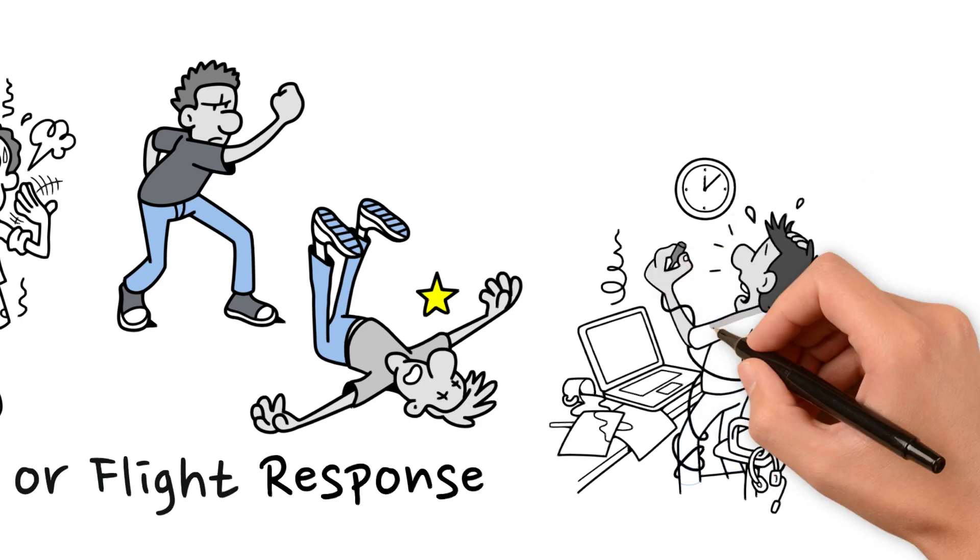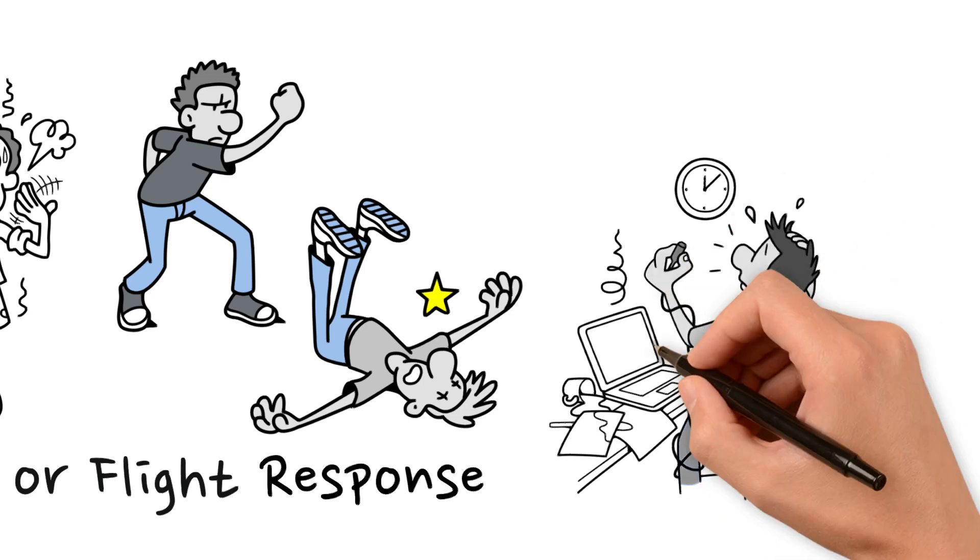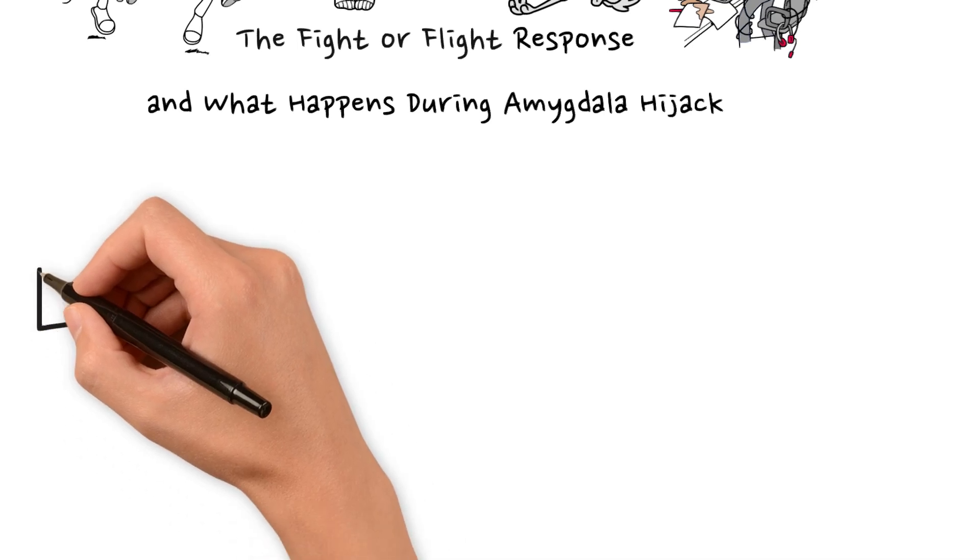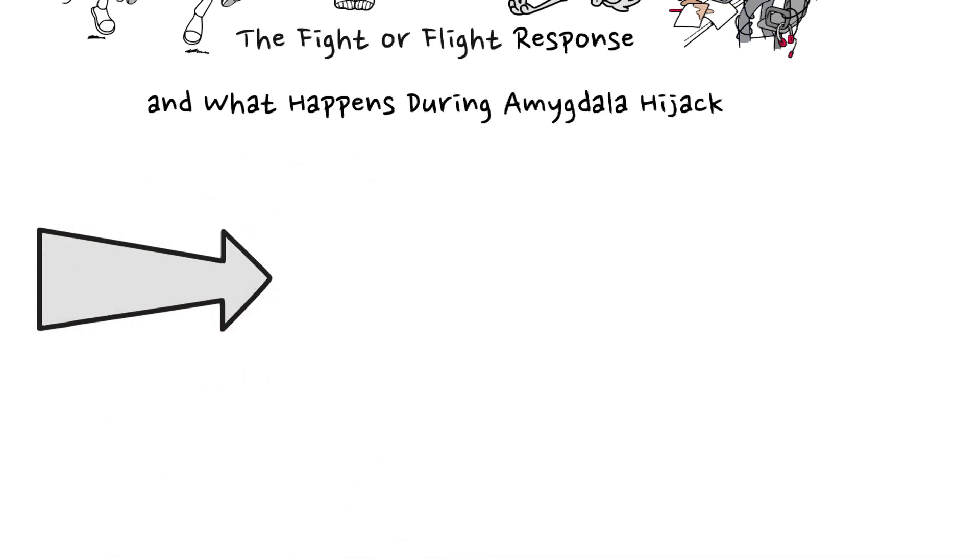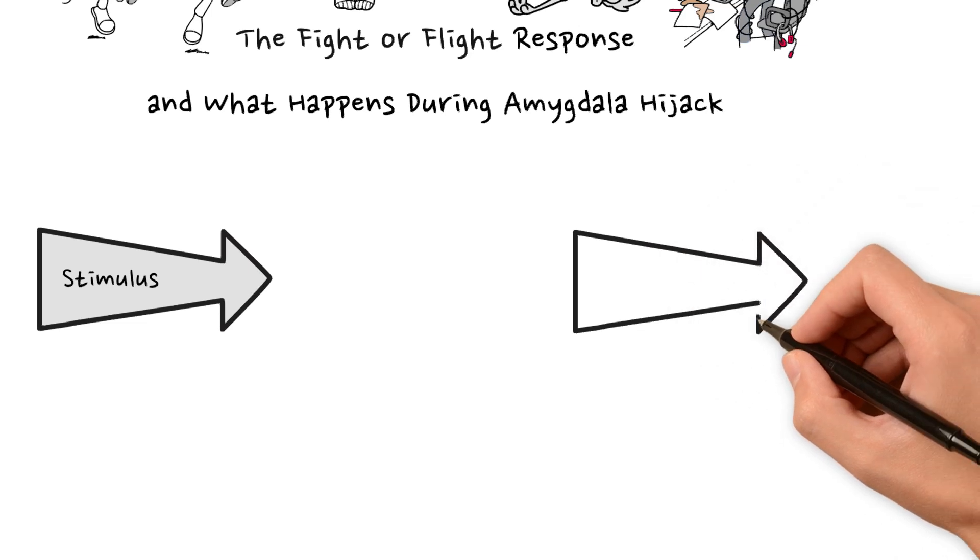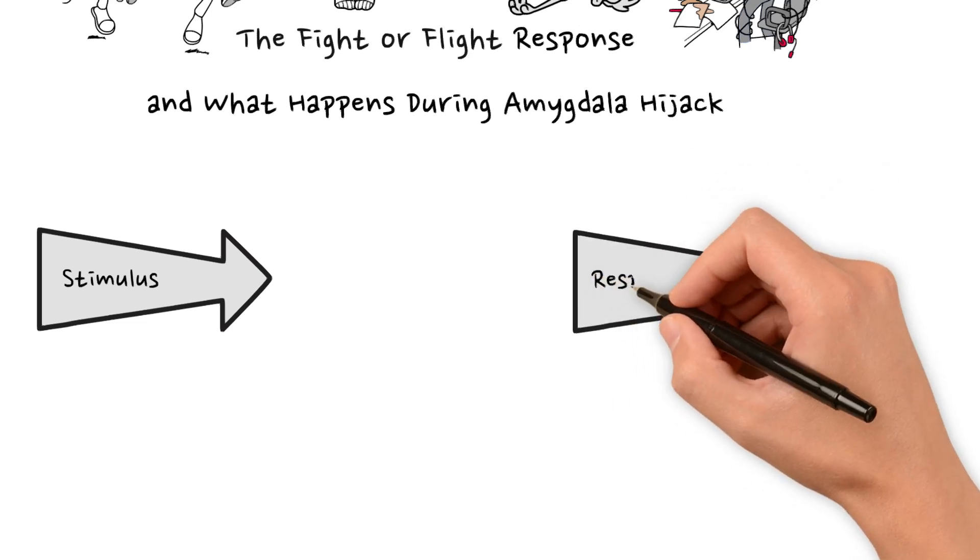So why does this fight-or-flight response kick in, and what can we do about it? Our neurobiology dictates our responses to external stimuli. In other words, our brains are wired to react in certain ways in certain circumstances.